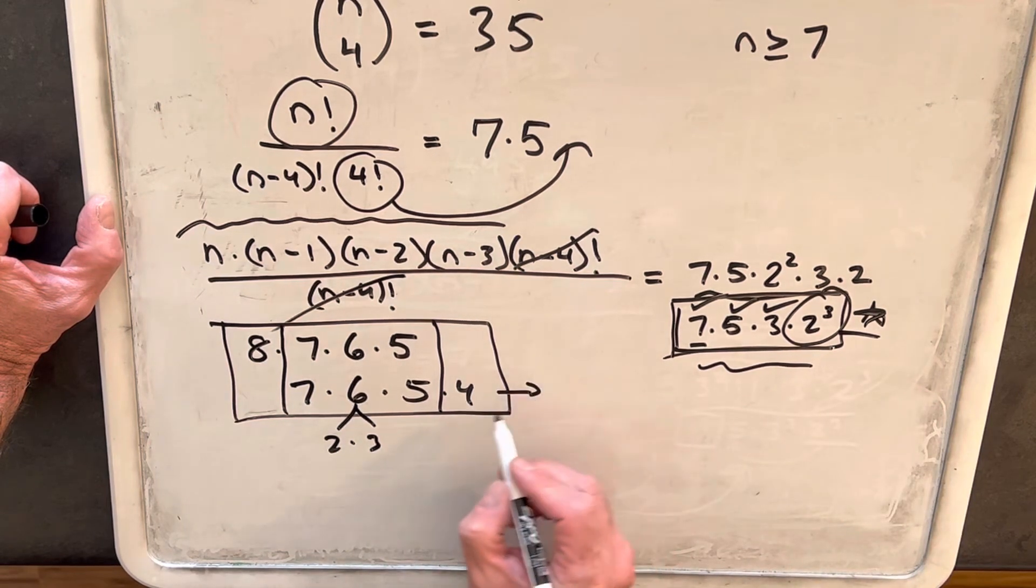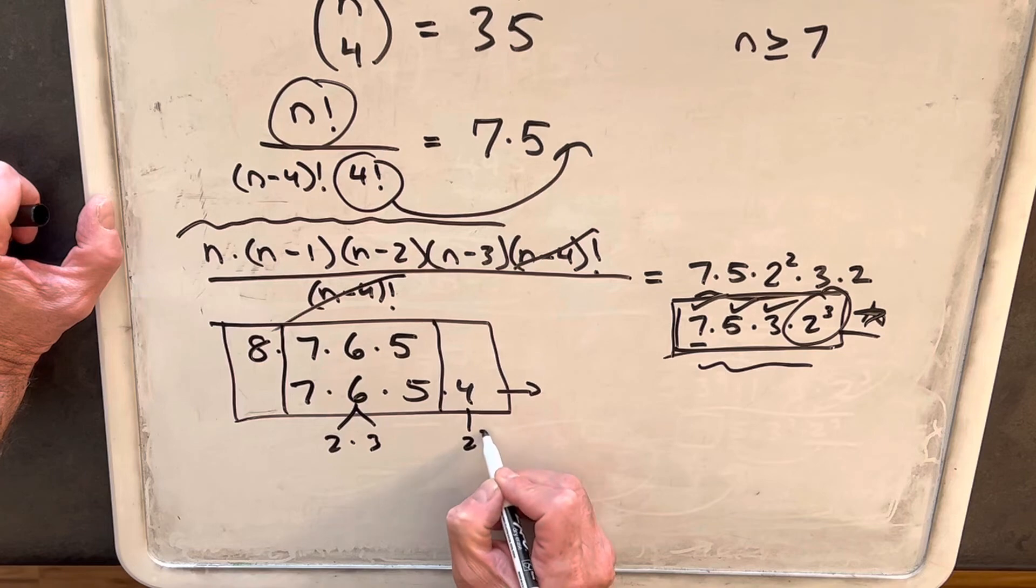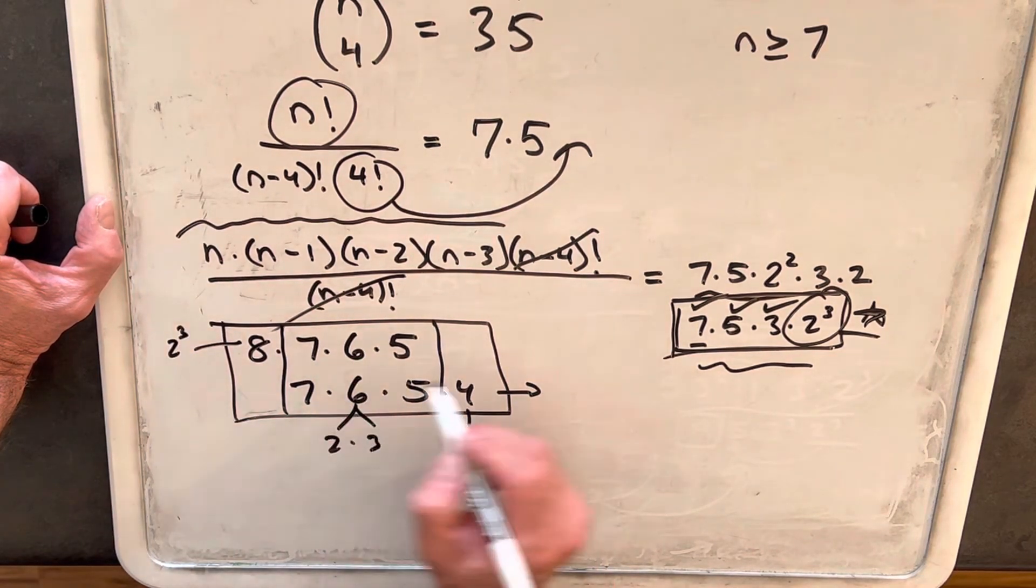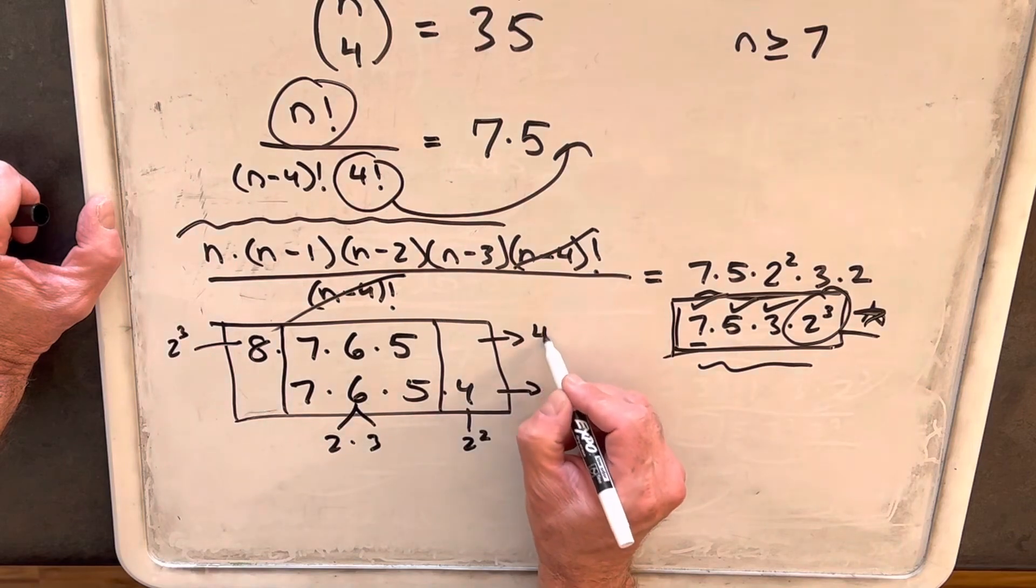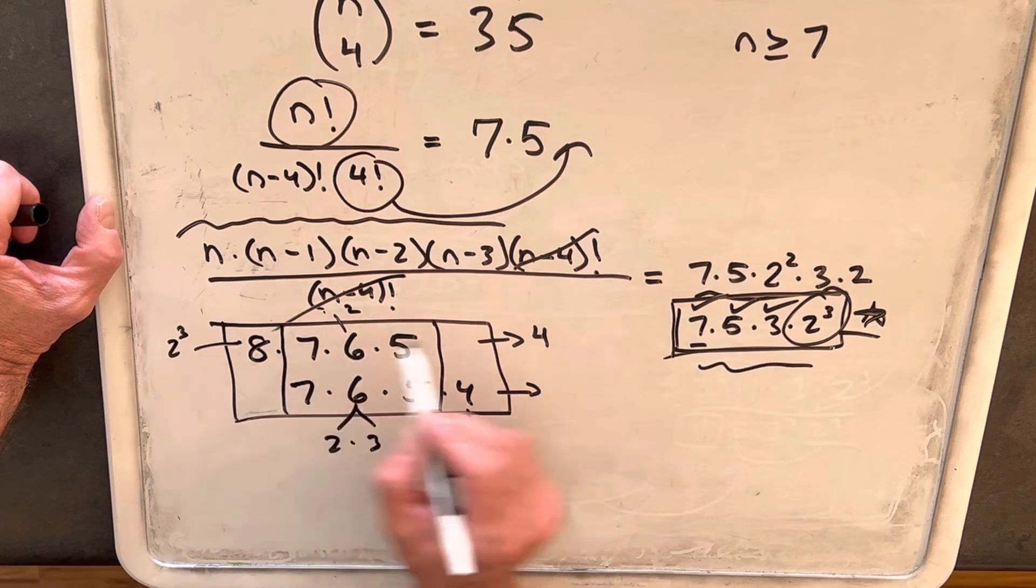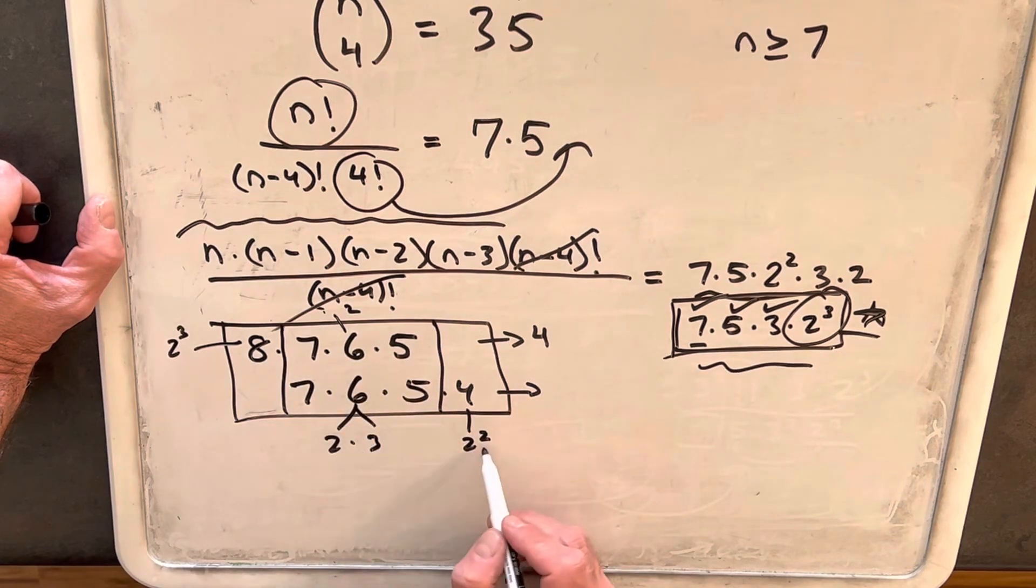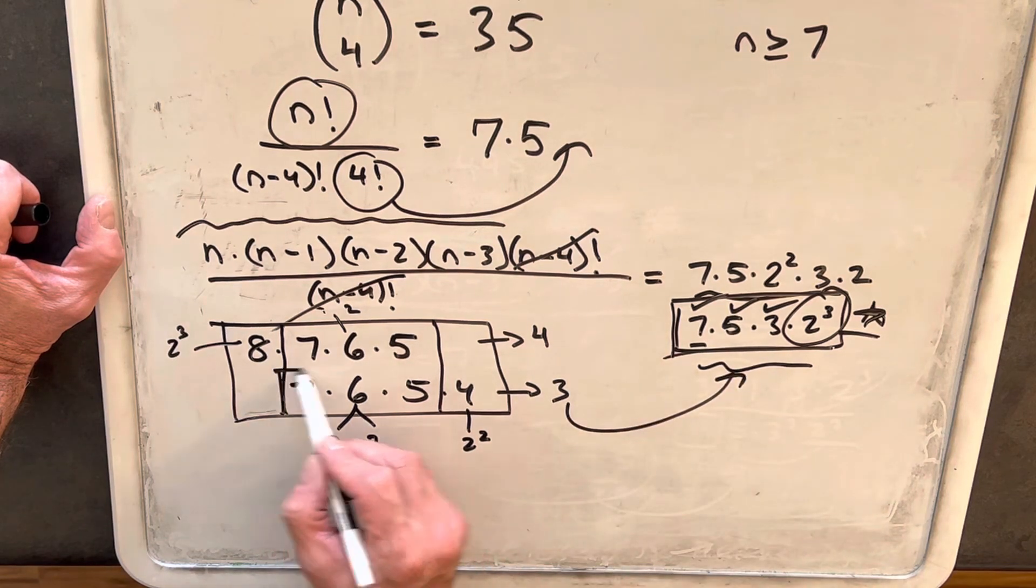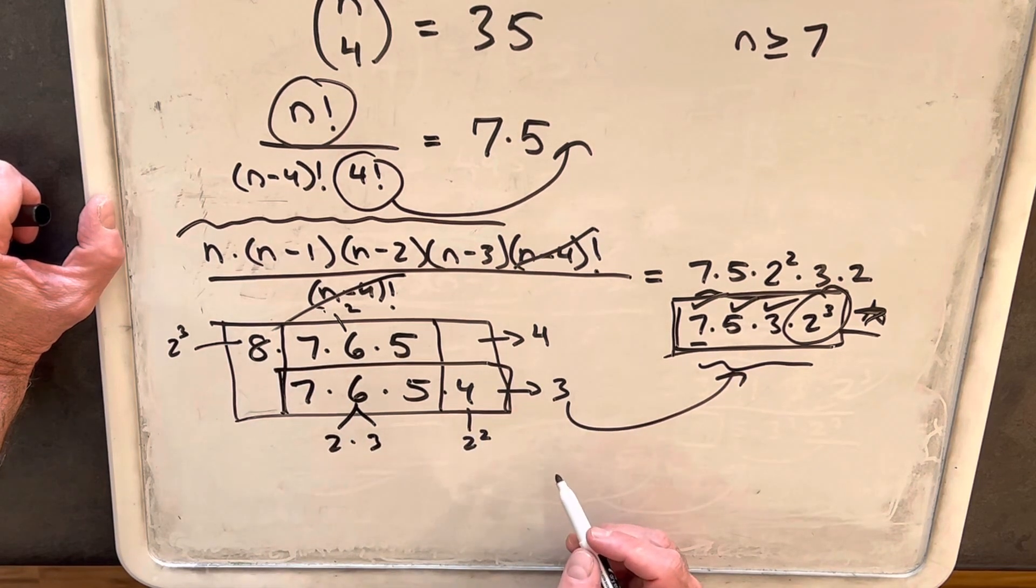So let's just count up 2s. 4 is 2 squared. 8 is 2 cubed. So that means in this expression, we have 4 twos. We have a 2 here in the 6. And then in this expression, we have 3 twos. So that's going to match this. So that means our answer must be 7 times 6 times 5 times 4.